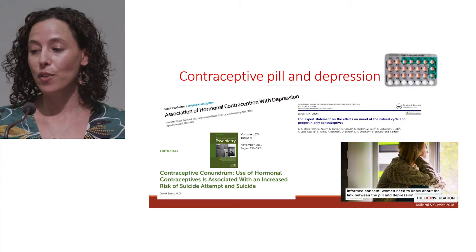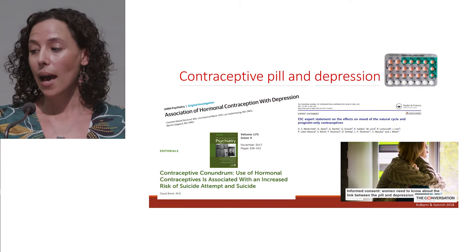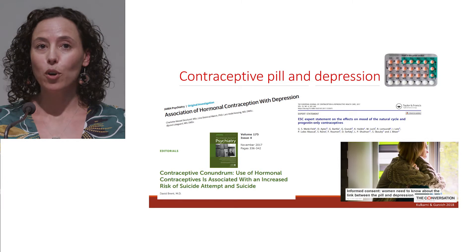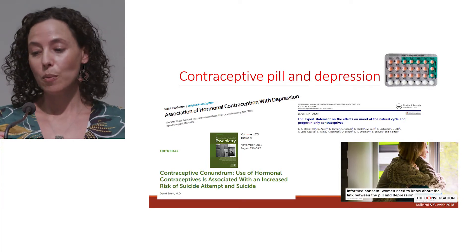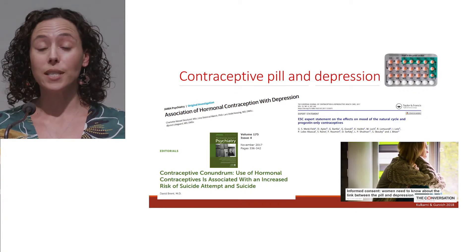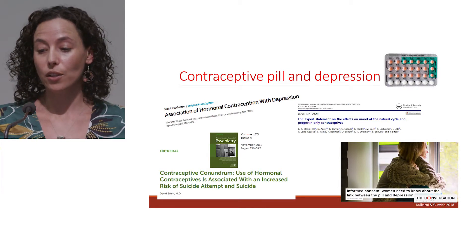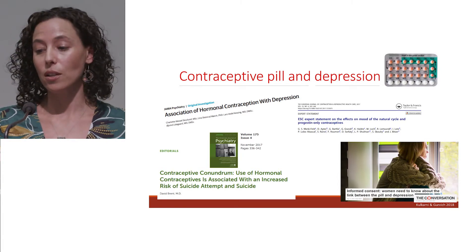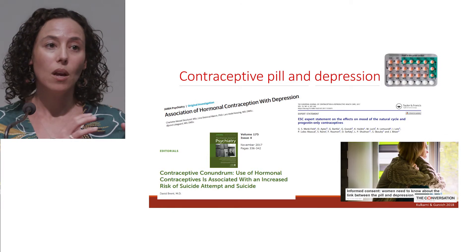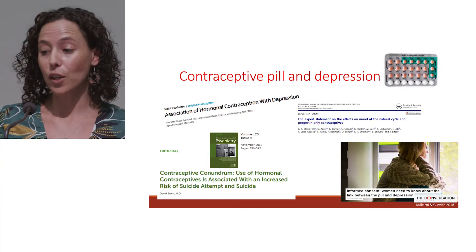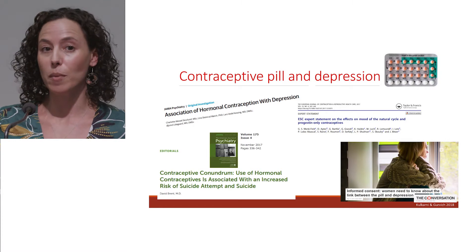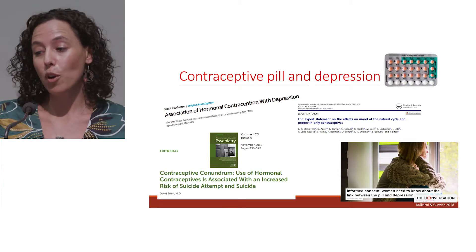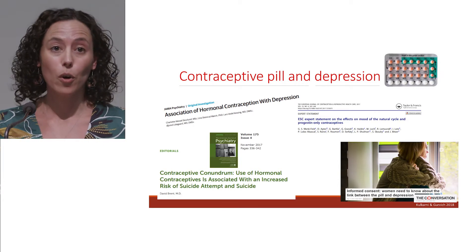More concerning are some of the mood changes associated with the contraceptive pill. There was a big study published in JAMA Psychiatry — a Danish study of over 1 million women — that found the use of the contraceptive pill was associated with antidepressant prescriptions and depression diagnoses. Not in everyone, but a significant association was detected. They also found that this risk was heightened in adolescence. So there's a subgroup of people who are particularly vulnerable to the effects of these hormones on their mood.